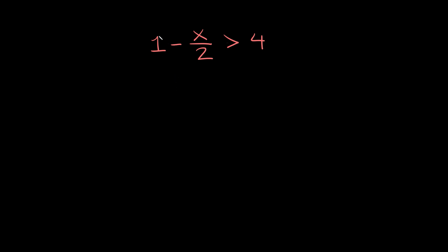So here we have 1 minus x over 2 is greater than 4. So we're trying to solve for x — we're trying to isolate it. The first thing we can do is get rid of this positive 1 and move it to the other side.